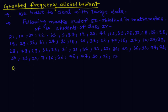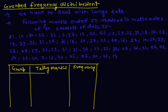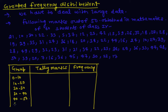Now I take a table with columns: group, tally marks, and frequency. The groups are: 1st group 0 to 10, 2nd group 10 to 20, 3rd group 20 to 30, 4th group 30 to 40, 5th group 40 to 50, and 6th group 50 to 60.